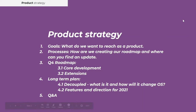First, we're going to discuss the goals — what do we want to reach as a product. Then we're going to discuss some processes: how are we creating our roadmap and where you can find an update. Then we will move forward to the Q4 Roadmap, covering core development, extensions, and everything you will find in the next three months on your platform. Then we'll discuss more of the long-term plan — where we're heading in 2021, what decoupled means, and how it will change the OpenSocial platforms. We'll end with a Q&A.